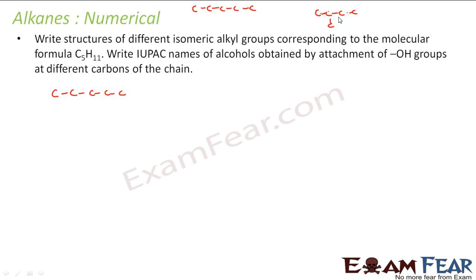There is only one possibility of the scenario where you have 4 carbons in the straight chain and 1 in the branch. And what else you can have — one more option is with 3 carbons in the straight chain and branches. So these are the 3 possible isomers of pentane.